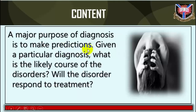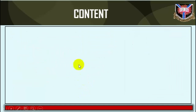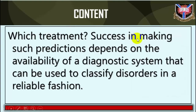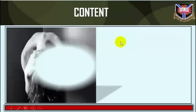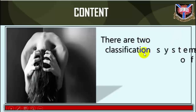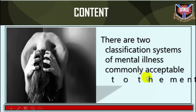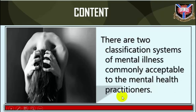A major purpose of diagnosis is to make predictions: given a particular diagnosis, what is the likely cause of the disorder? What outcomes will occur? Will the disorder respond to treatment, and which treatment? Making such predictions depends on the availability of a diagnostic system that can be used to classify disorders in a reliable fashion. There are two classification systems of mental illness commonly acceptable to mental health practitioners.